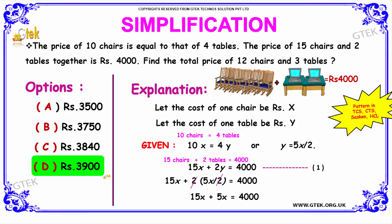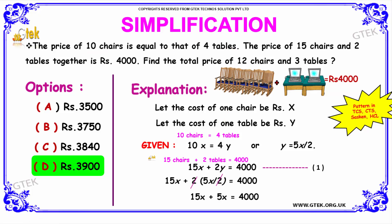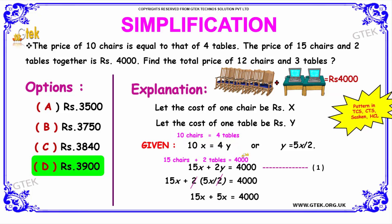The solution: from the given question, let us assume the cost of 1 chair be X and the cost of 1 table be Rs. Y. Since the price of 10 chairs is equal to that of 4 tables, we have 10X is equal to 4Y. Solving this, we get Y is equal to 5X by 2.